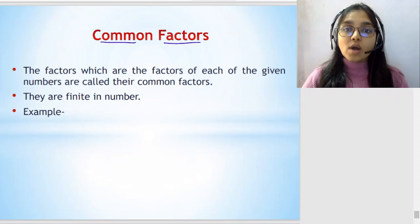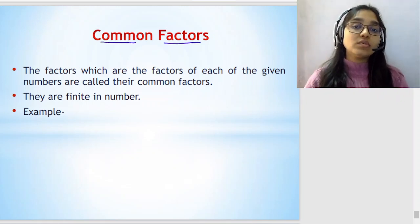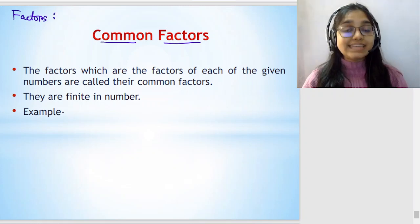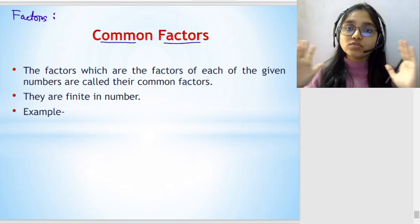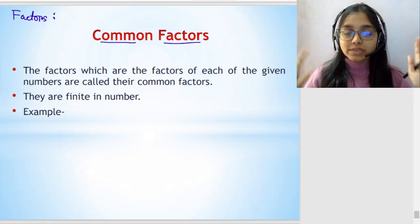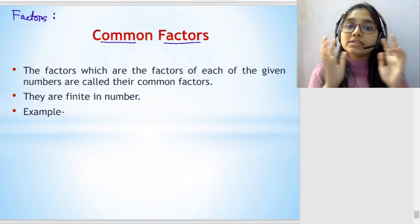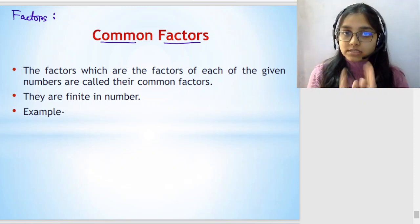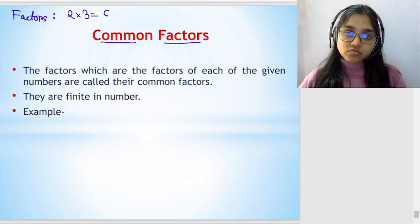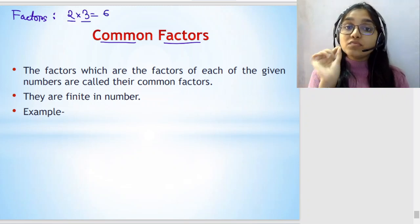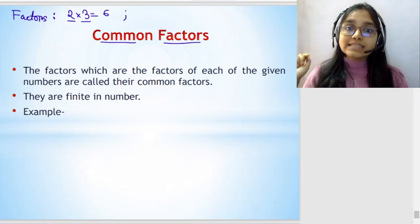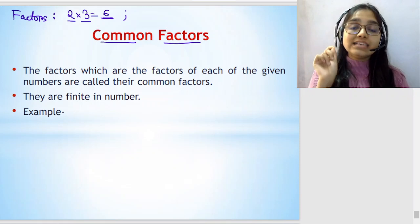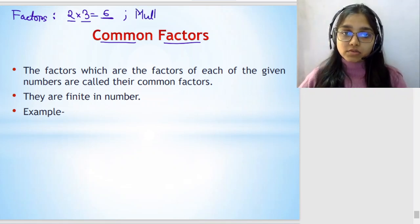So over here we will be understanding what are common factors. But before that, let's have a quick revision of what are factors and multiples. So factors we have already understood. In this channel you will get detailed videos on all topics. What are factors? When we multiply two or more numbers to get a product, the numbers we multiply are factors. For example, 2 into 3 equals 6. So here 2 and 3 are the factors of the number 6. Similarly, when we multiply numbers to get a product, the product that we get is called the multiples of that number. So let's take up an example for the multiples as well.